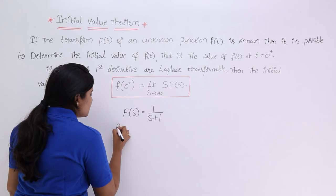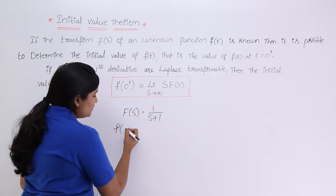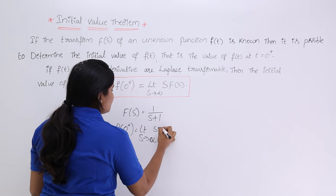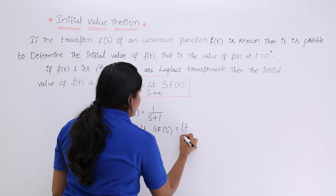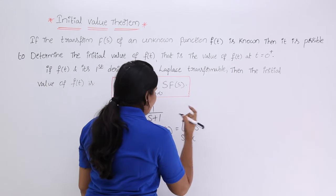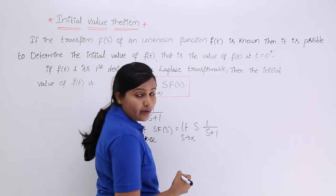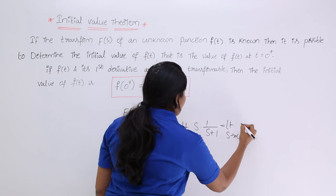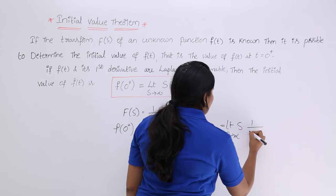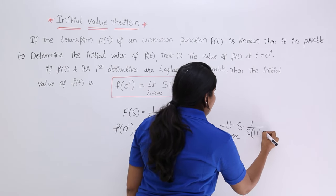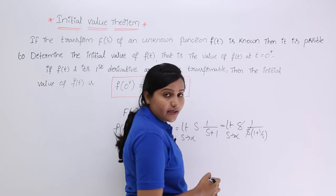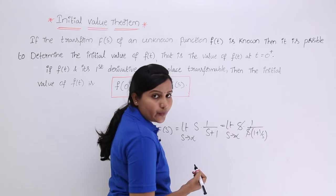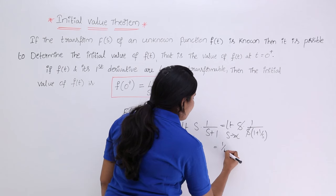So, if you want the signal's initial value, that means f(0+), you can easily trace it using the formula: limit as s tends to infinity of s·F(s). That means limit s tending to infinity of s multiplied by 1/(s+1). Here I am taking s as a common factor in the denominator, giving limit s tending to infinity of s multiplied by 1 over s(1 + 1/s). The s terms cancel, and applying s tending to infinity, 1/infinity becomes 0.